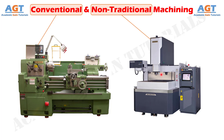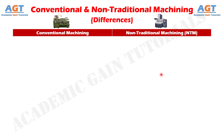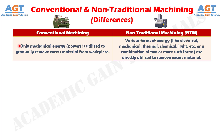Let's look into the basic differences between conventional machining and non-traditional machining in a tabular form. Difference No. 1: In conventional machining, only mechanical energy or power is utilized to gradually remove excess material from workpiece, whereas in non-traditional machining, various forms of energy like electrical, mechanical, thermal, chemical, light, etc., or a combination of two or more such forms, are directly utilized to remove excess material.